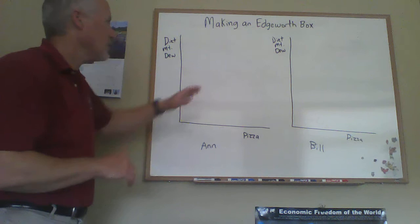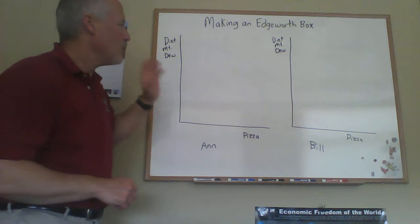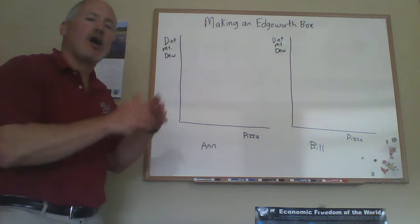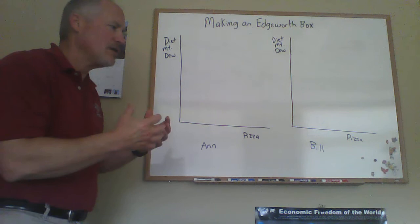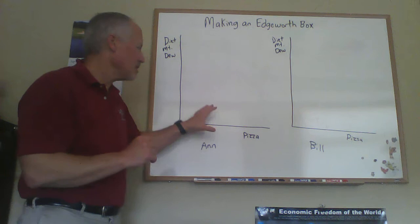What I've drawn is for two goods — my two favorite goods — pizza and Diet Mountain Dew. What we have would be the axes on which we could have two different consumers' budget line and indifference curve diagrams. If you think of those budget line and indifference curve diagrams that we had back in Chapter 3, take one for each of two different people.